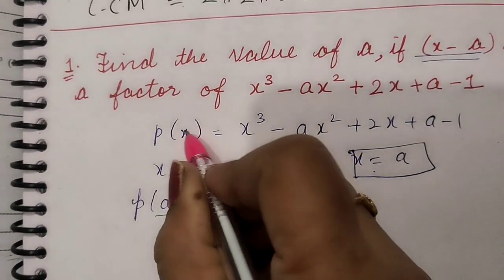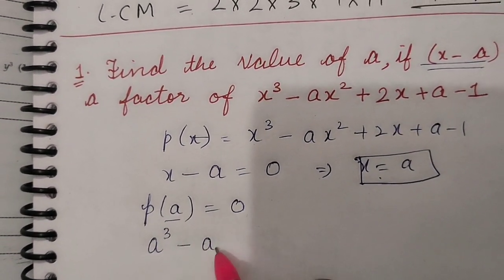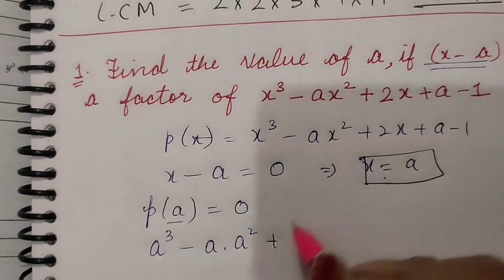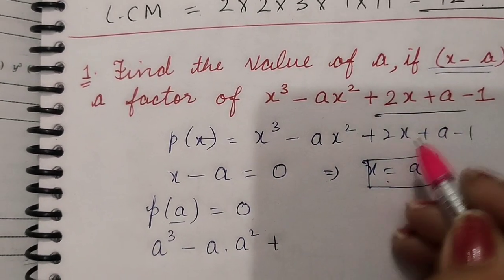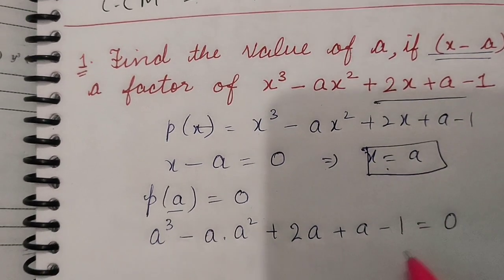We substitute a in place of x. So it is becoming a³ - a·a² + 2a + a - 1, and this complete expression becomes 0.